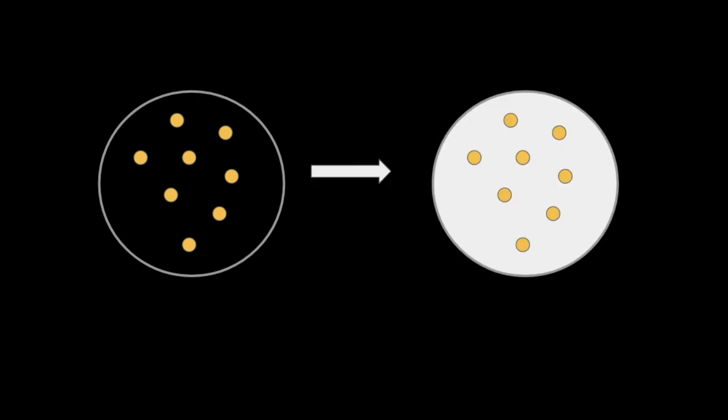The cells are replica plated to a membrane paper and lysed with sodium hydroxide. This will break open the cells and denature the DNA. Then the membrane is baked to fix the DNA in place.